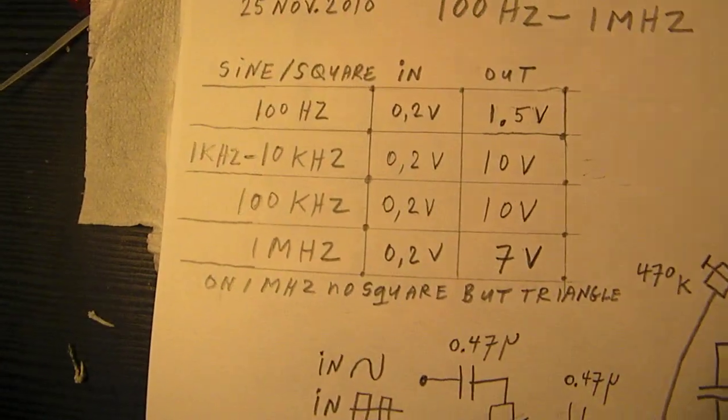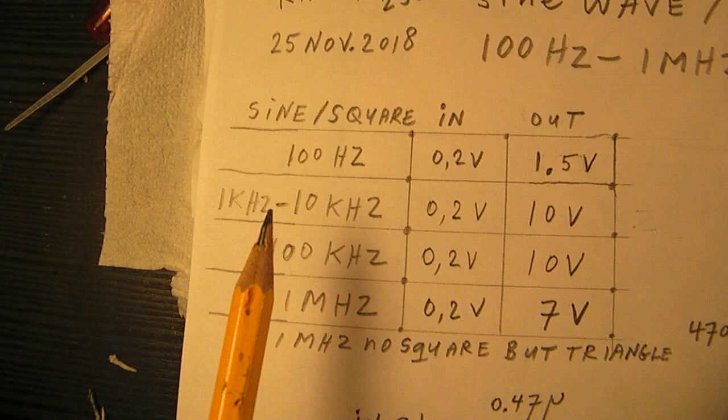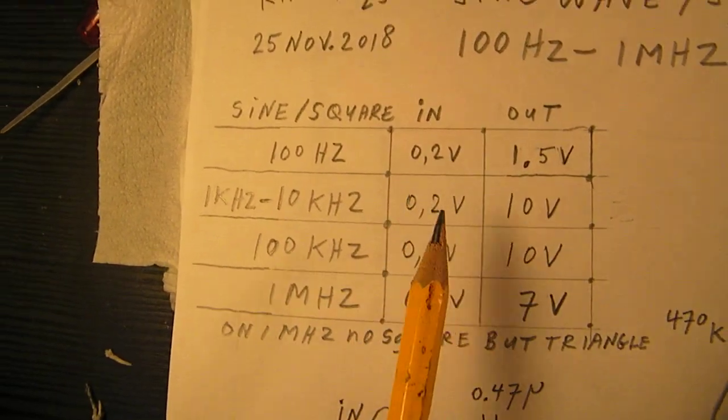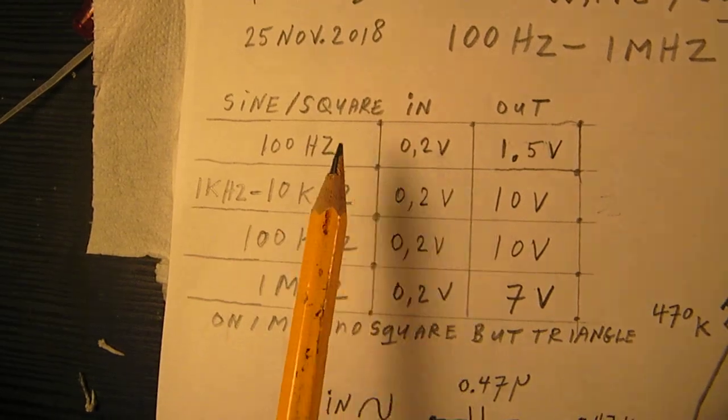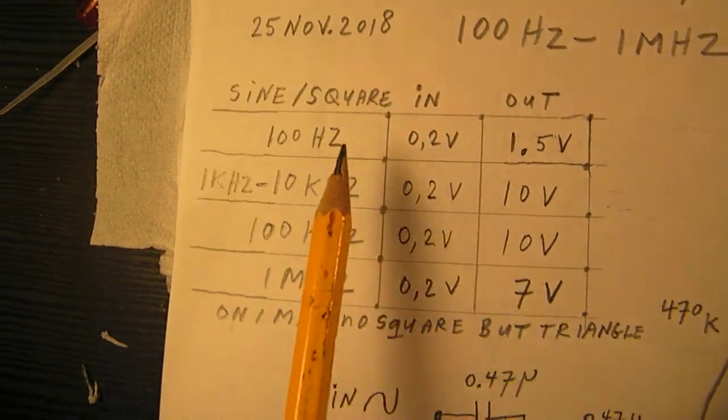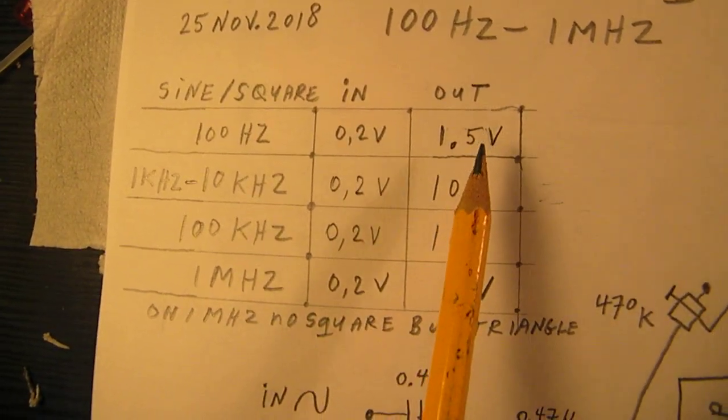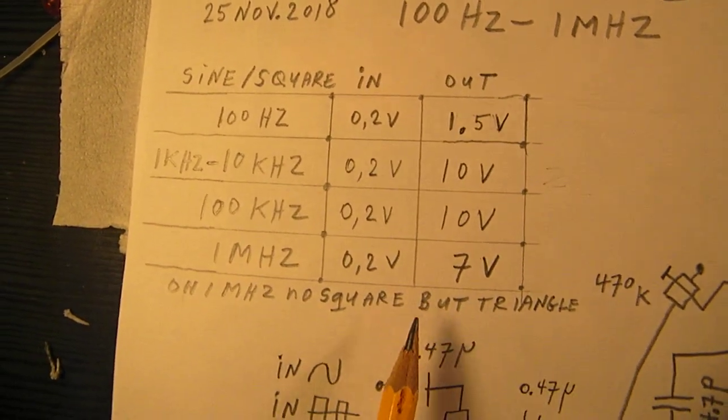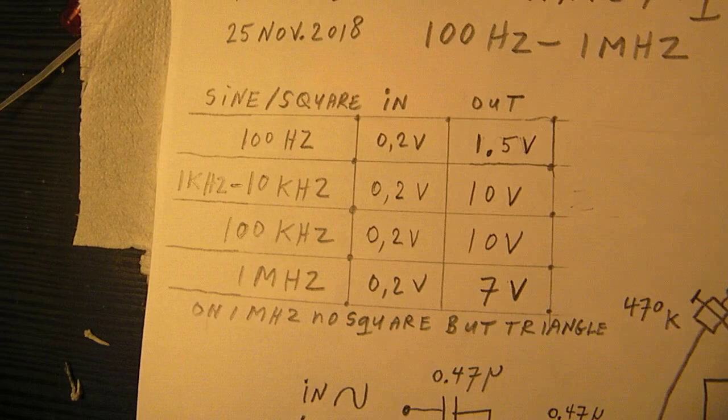This is perhaps important to tell. Here are the input and the output voltages. Input 0.2 volts and here you can see that on the low frequency there's not so much output. But say from one kilohertz up to one megahertz there is a quite substantial AC output.